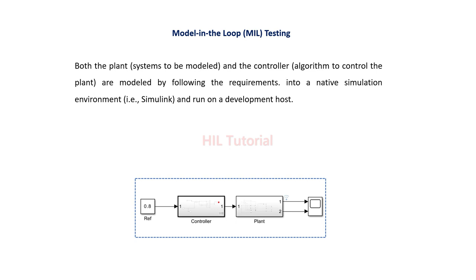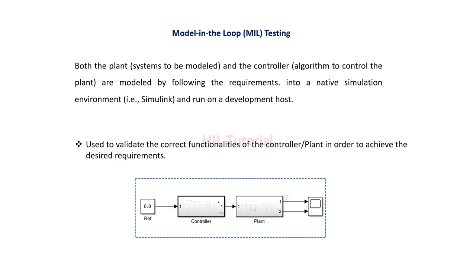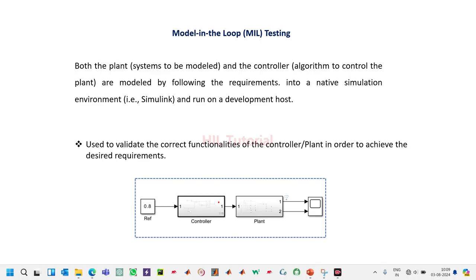Why do we actually do this testing? The answer is to check the correct functionalities of a particular controller which you have designed based on the requirement of your customer or the plant. This is how we do Model-in-the-Loop testing in automotive engineering, especially in model-based design. Once you finish Model-in-the-Loop testing, you have to go to the next level of testing, which is Software-in-the-Loop testing.